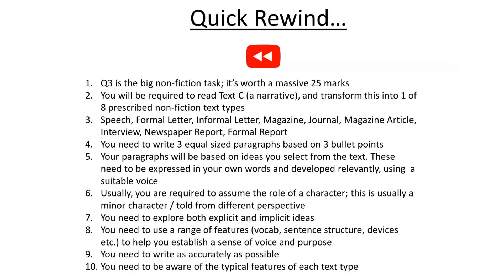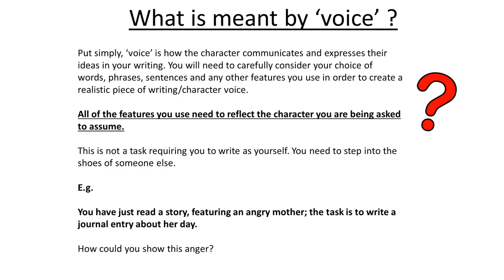Accuracy is very, very important for this question. You also need to be aware of the typical features of each text type. For example, journal writing: you would expect emotive language, a reflective tone, and the first-person pronoun used throughout. For a newspaper report: you would expect factual language, an unbiased tone, and those five W's — who, what, where, when, and why — established at the beginning.